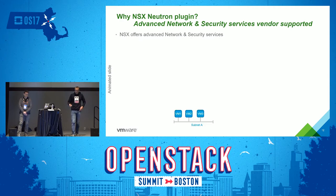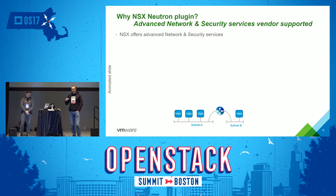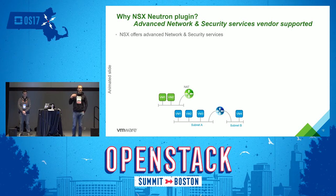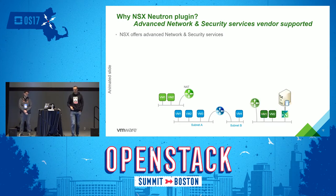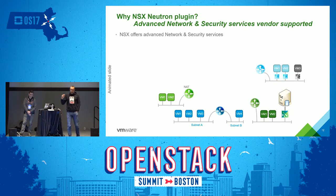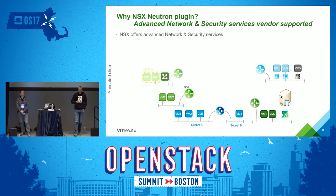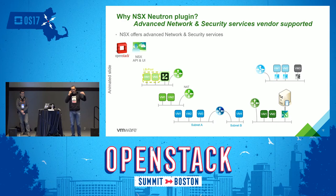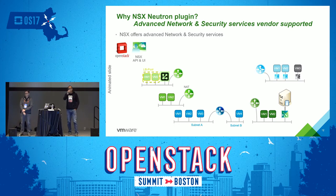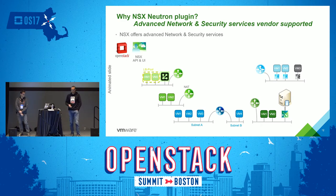Out of the box with NSX you have L2, overlays, distributed routing — the DVR equivalent in OpenStack — NAT and no-NAT. If you're in the enterprise, NAT sucks, lots of people don't want floating IPs, and you don't have to use them with NSX. You have L2 connectivity between VMs and physical servers, security groups with stateful firewall, and load balancing — all driven from OpenStack. You don't talk to NSX; you talk to OpenStack via the API, Horizon, or Heat, and the NSX plugin translates that, creating the network topology behind the scenes.